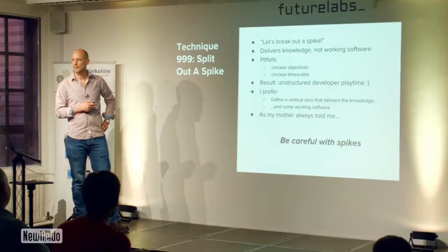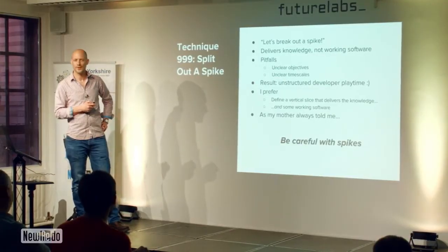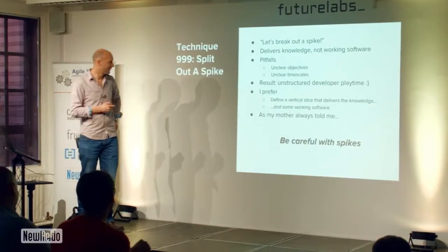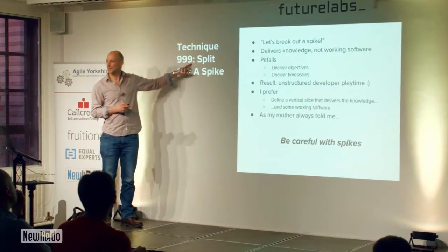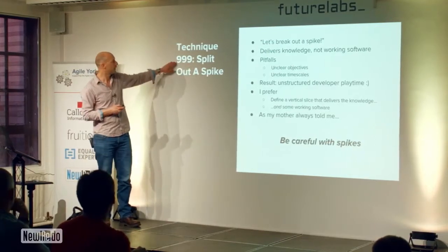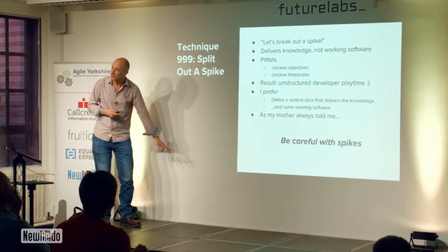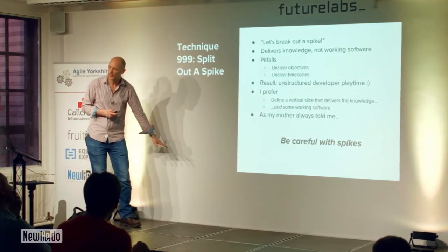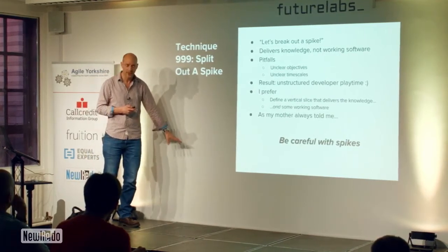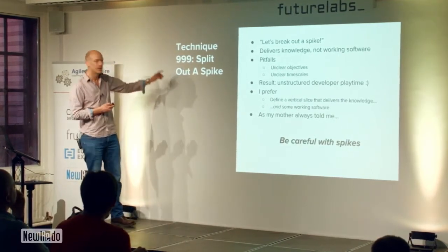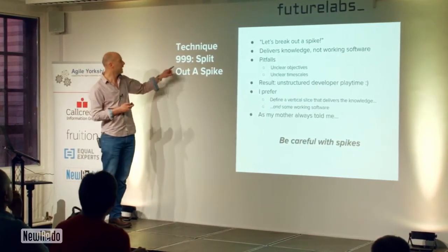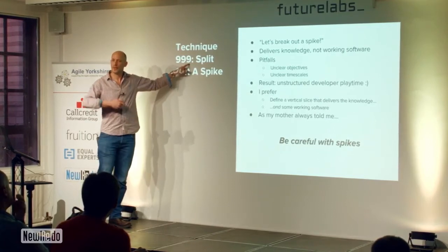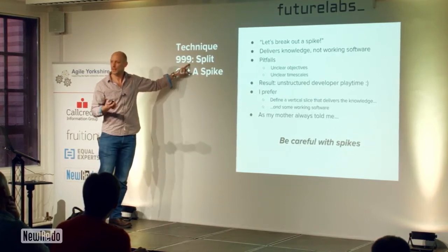Here's the gag, and my mother always told me, be careful with spikes. And that's why it's technique 999 as well. 999 is at the bottom of the list of numbers — actually, there are numbers bigger than 999, but it's certainly bigger than 7 — and also, it's the number you call if you have an accident with a spike.